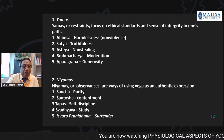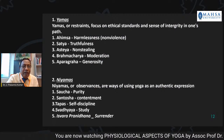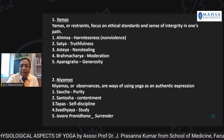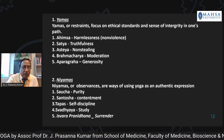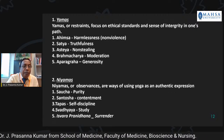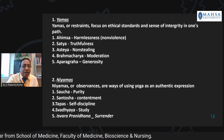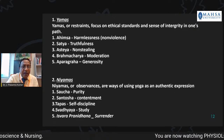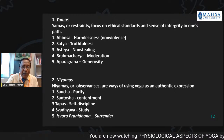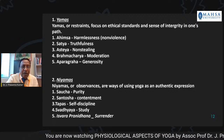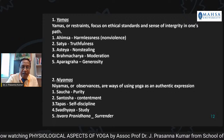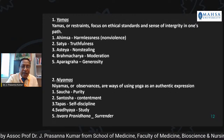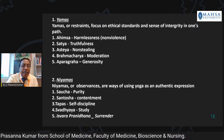Yamas, or restraints, focus on ethical standards and a sense of integrity in one's path. There are five yamas: Ahimsa — harmlessness or nonviolence; Sathya — truthfulness; Asteya — non-stealing; Brahmacharya — moderation; and Aparigraha — generosity.